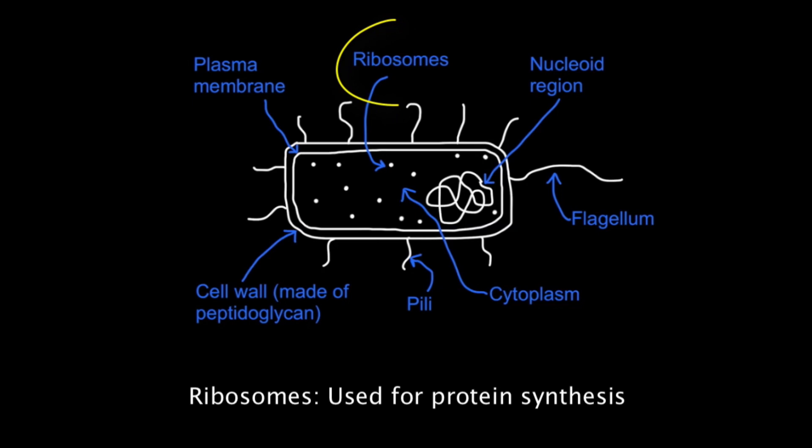And finally it has ribosomes which it uses for protein synthesis. But important to know please that these ribosomes are 70S, and the IB particularly wants you to know this. In eukaryotes it's 80S and prokaryotes it's 70S.